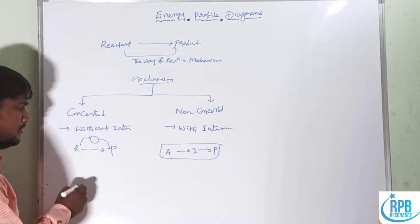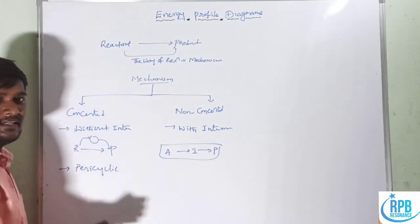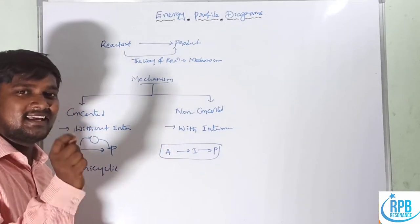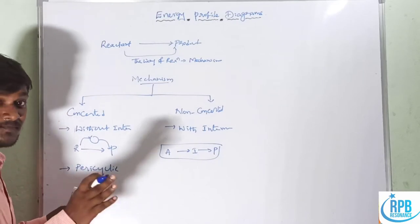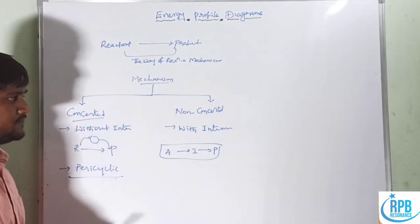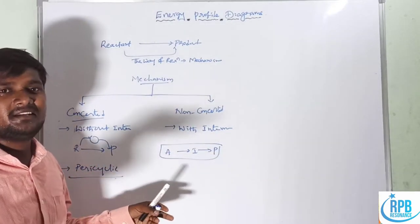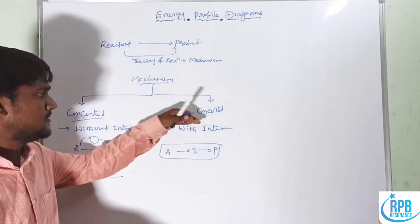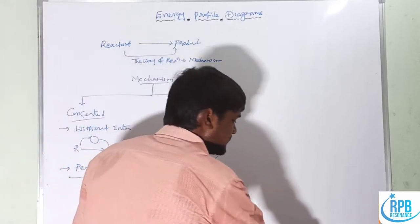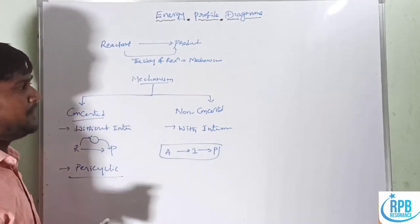All types of pericyclic reactions are concerted mechanisms — without intermediates they form the product, following a cyclic transition state. That's why they are called pericyclic. Pericyclic reactions are examples of the concerted mechanism. This is the simplest basic definition regarding mechanism.